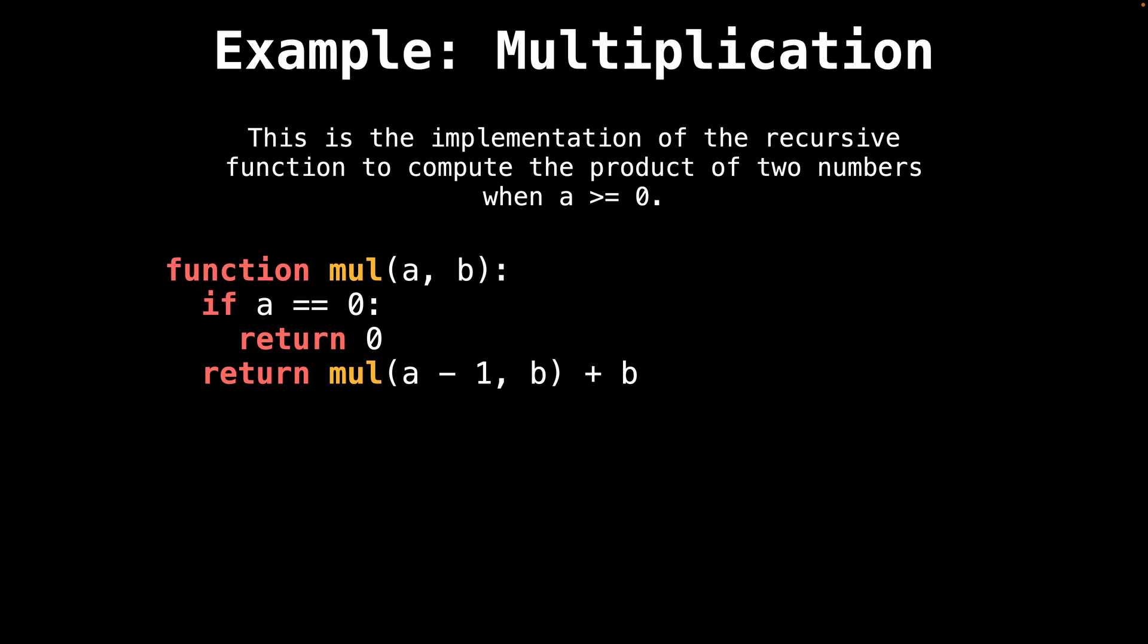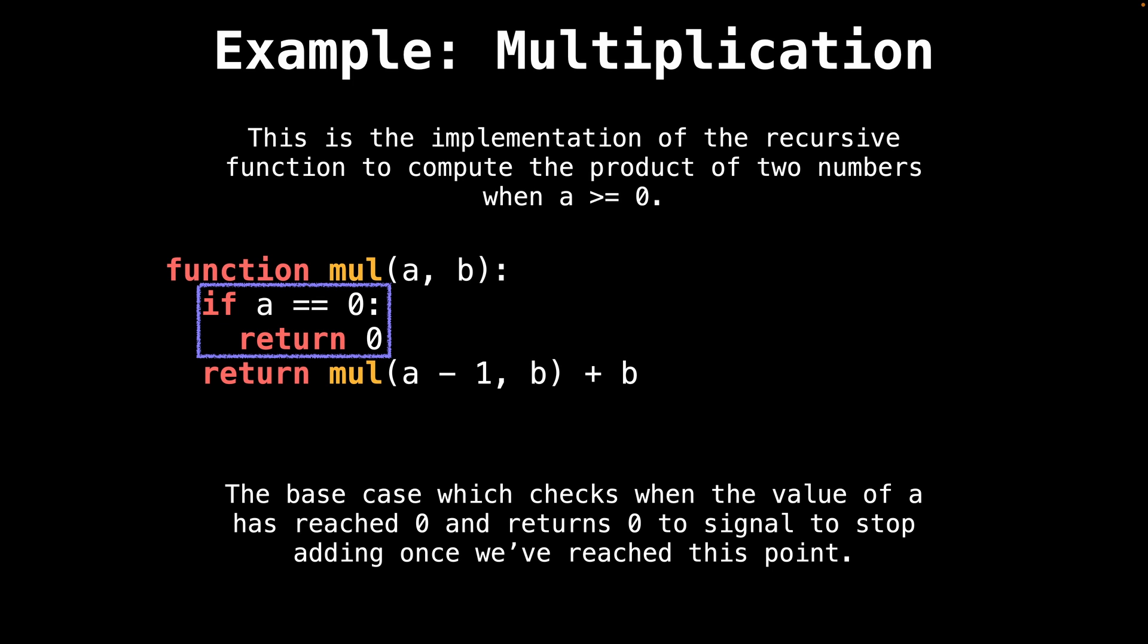Okay, so let's put it all together. This is the implementation of the recursive function mul, short for multiply, that computes the product of two numbers when a is greater than or equal to zero. Let's walk through the code and break down each component. The first statement is the base case—it checks if a equals zero, meaning that we have no more remaining additions left to do. a in this context can also be thought of as the number of remaining additions we have left to do since we want to add b, a times. Therefore, a serves as the total number of additions we wish to perform.